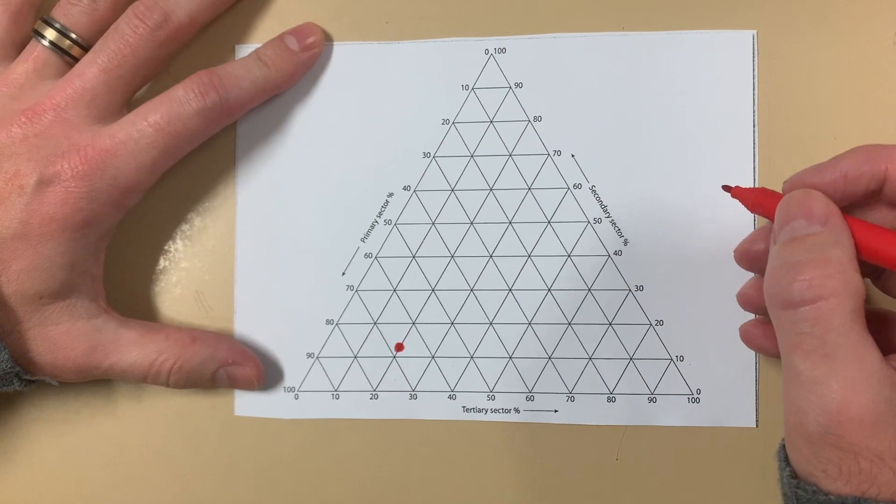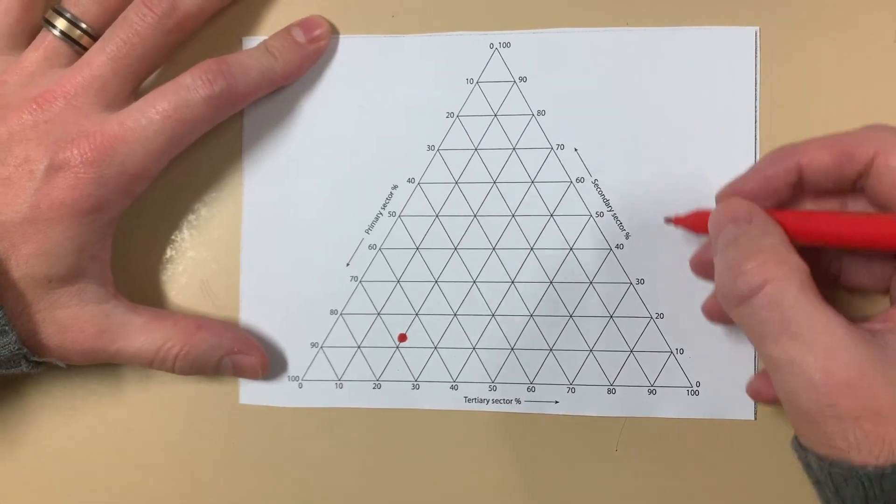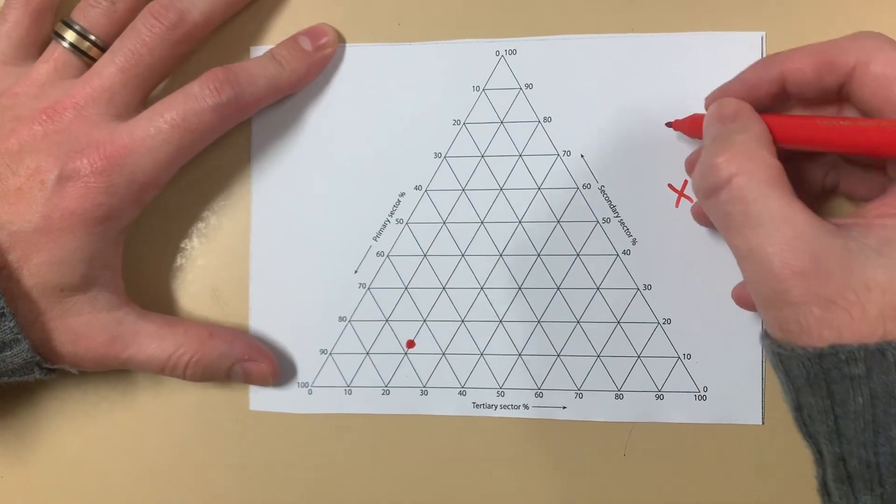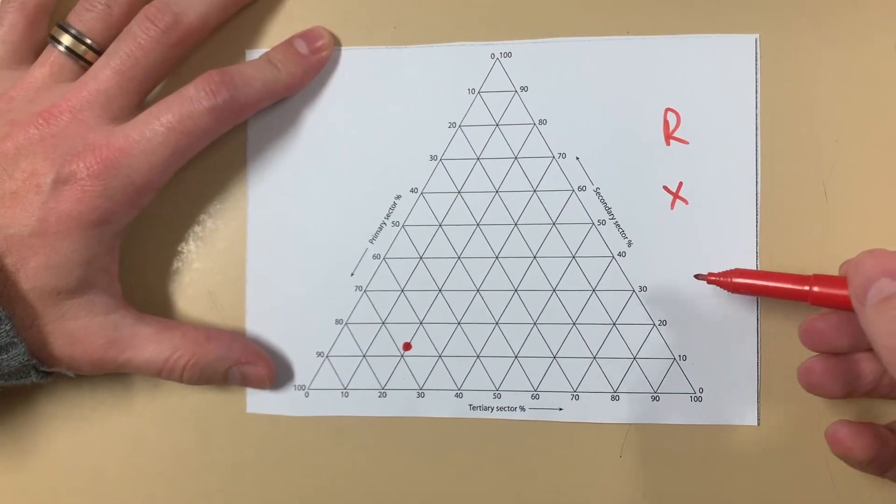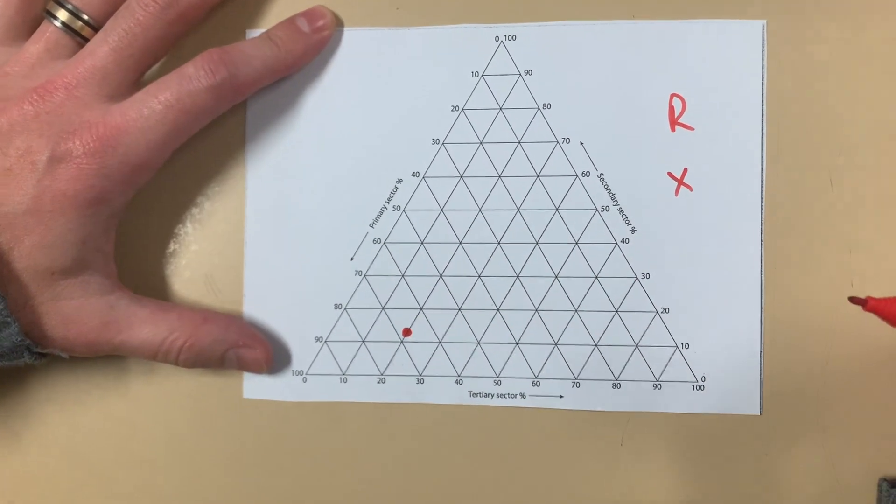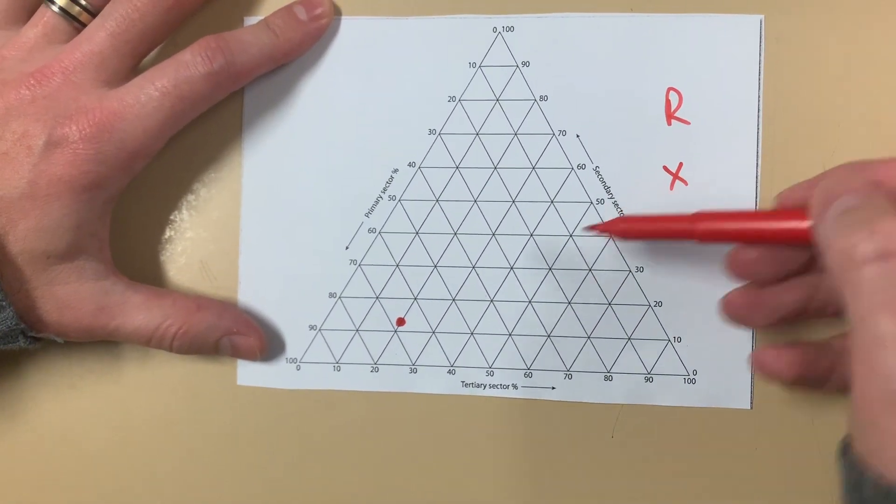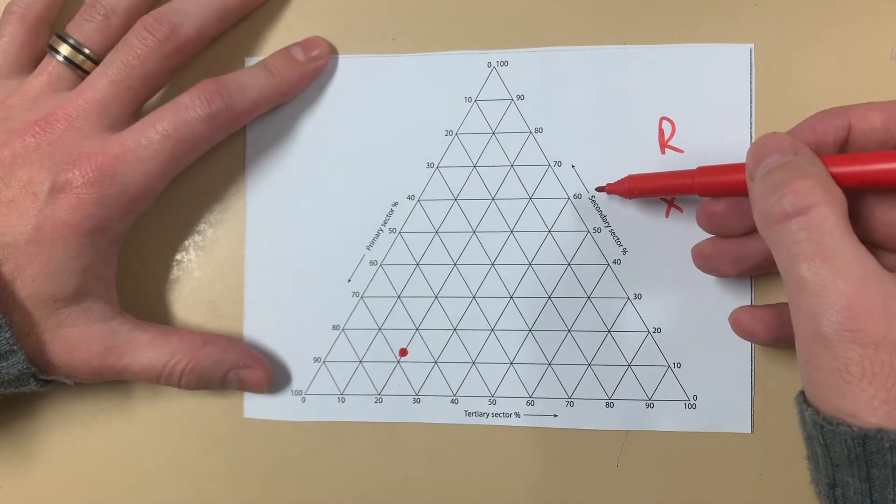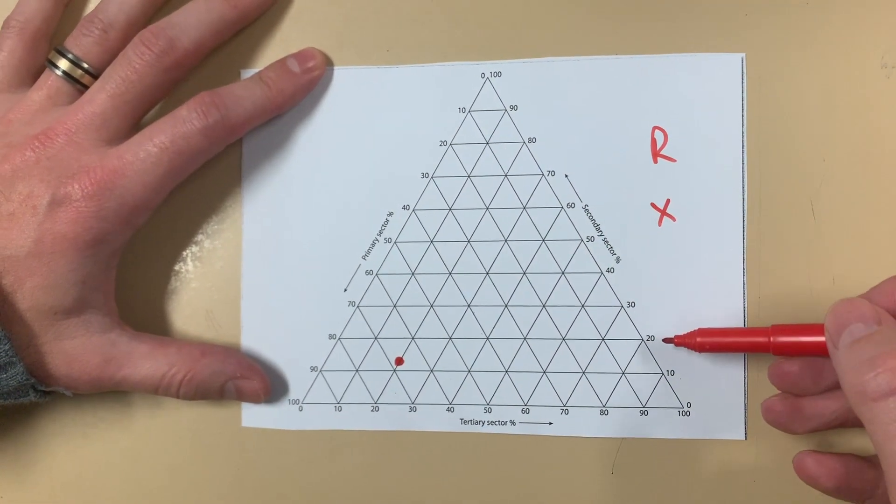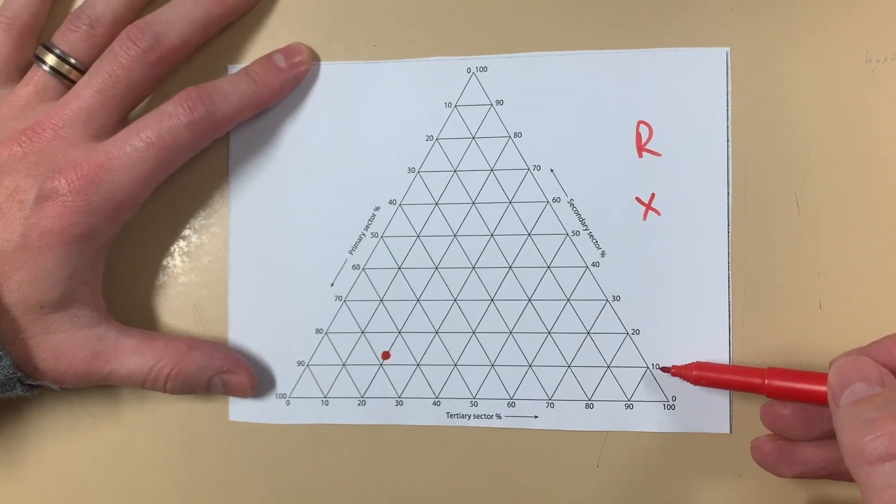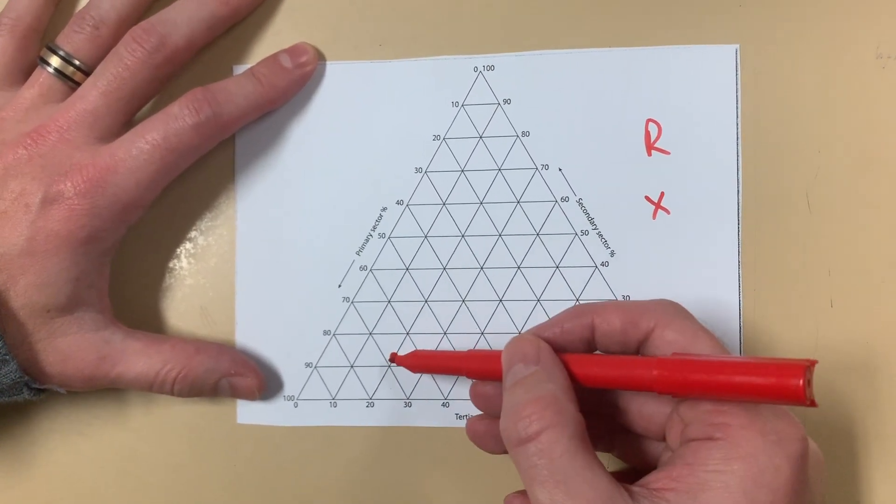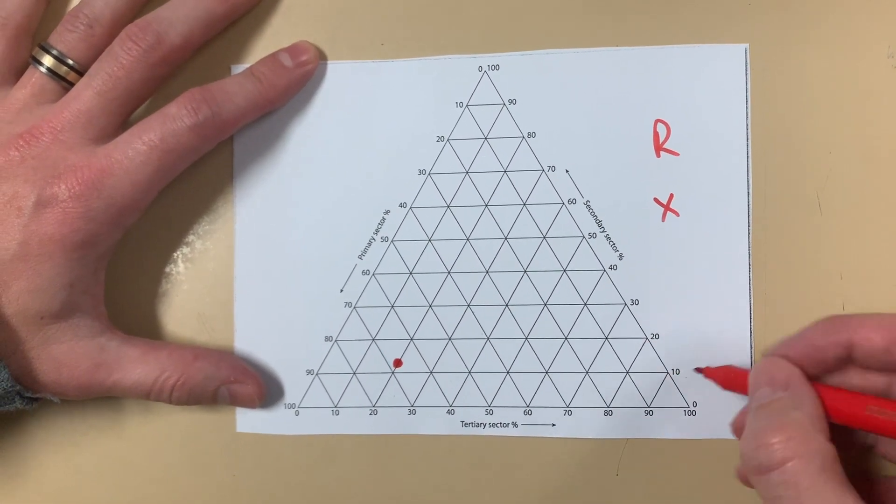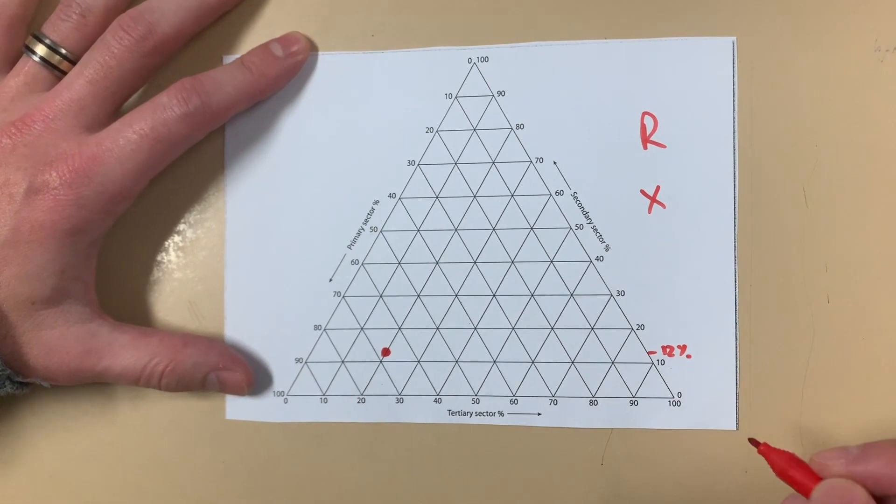So as Samantha said, if you start from the right hand side over here, this is always the easiest side to go from because you're going from the right hand side and all you have to do is go directly across, horizontally across. So our secondary sector, I've got a dot here that represents another country and the breakdown of the industry in that country. So if we start from the right hand side and go horizontally across, we can see that this is just above the ten percent line here. So that would be approximately twelve percent. Nice and easy. So we've got twelve percent there.